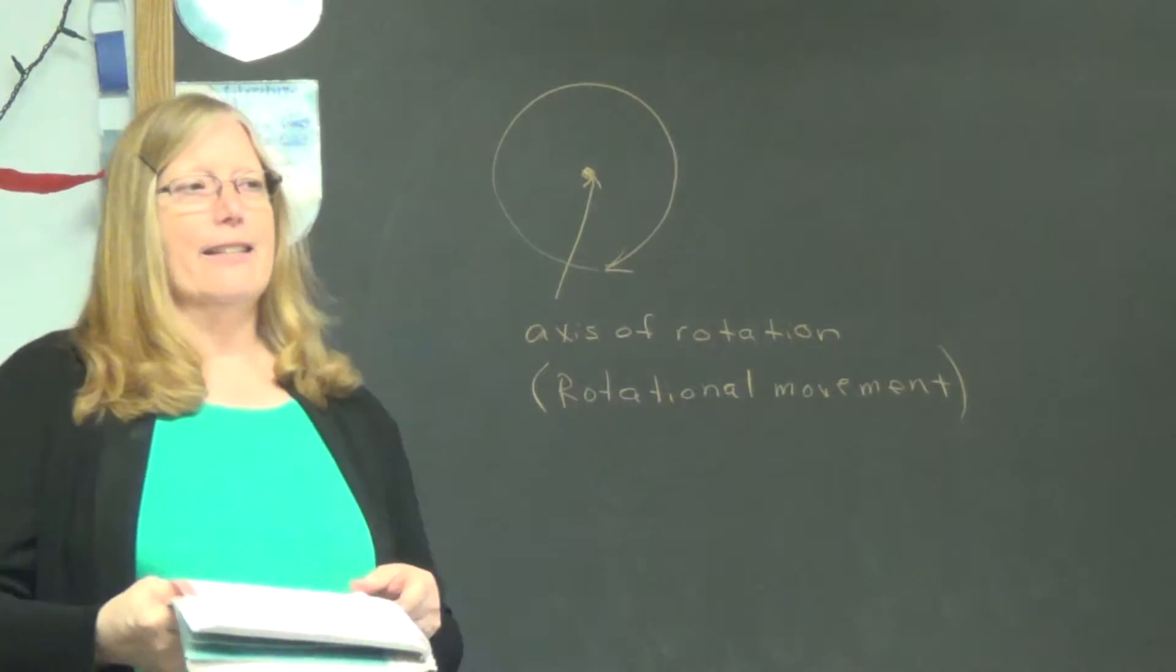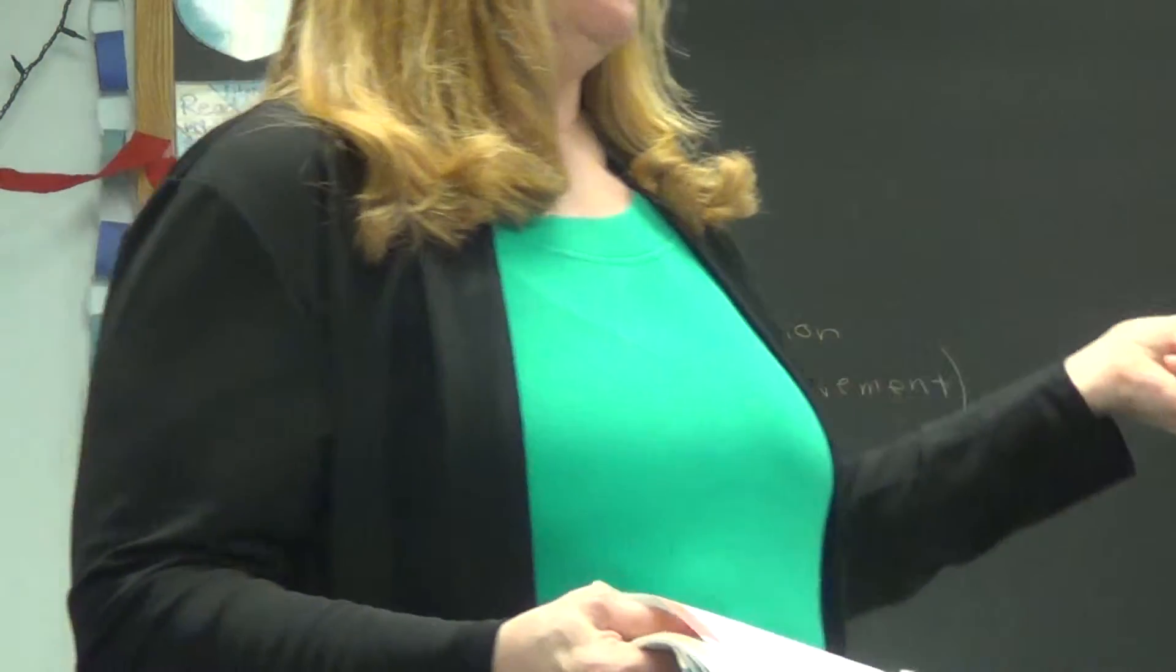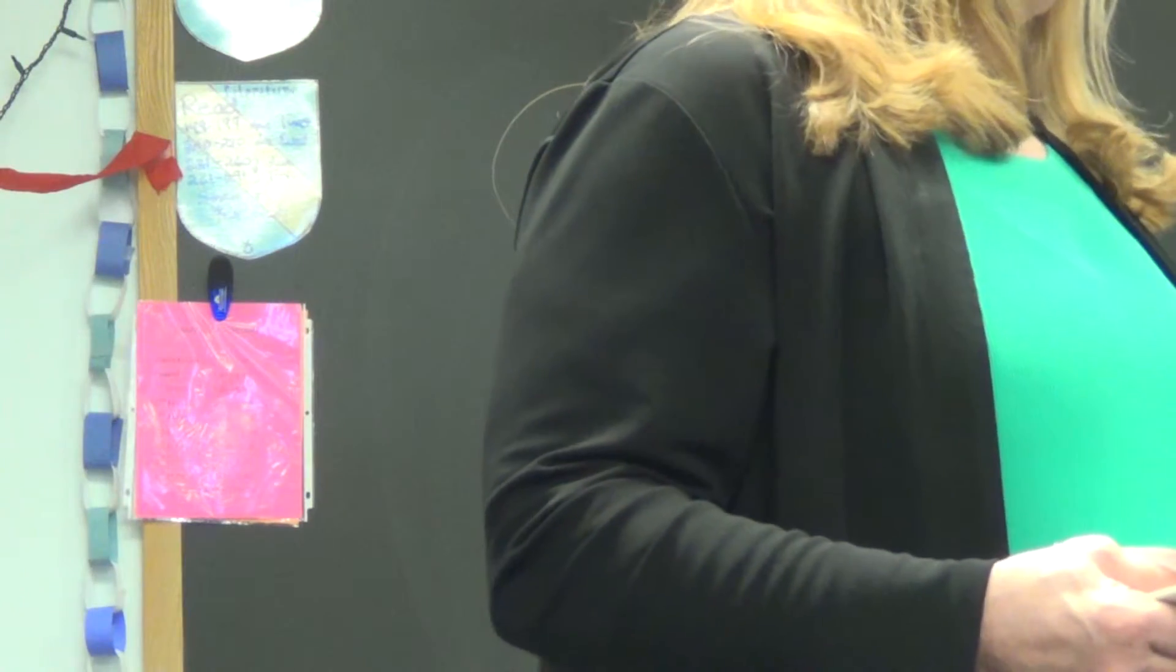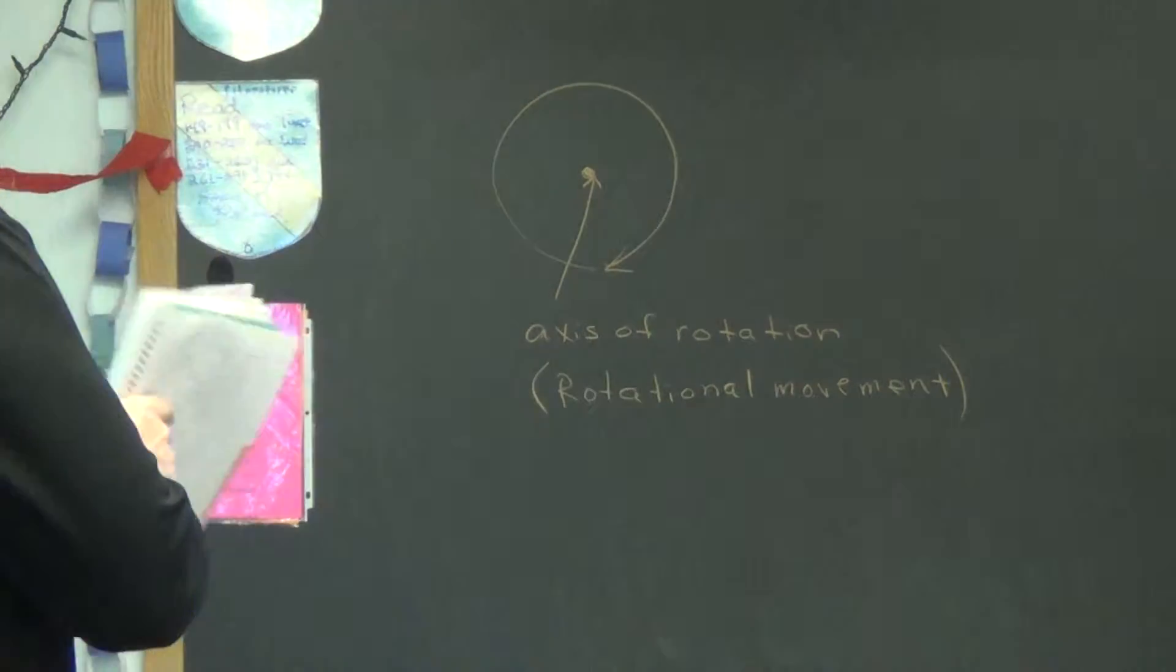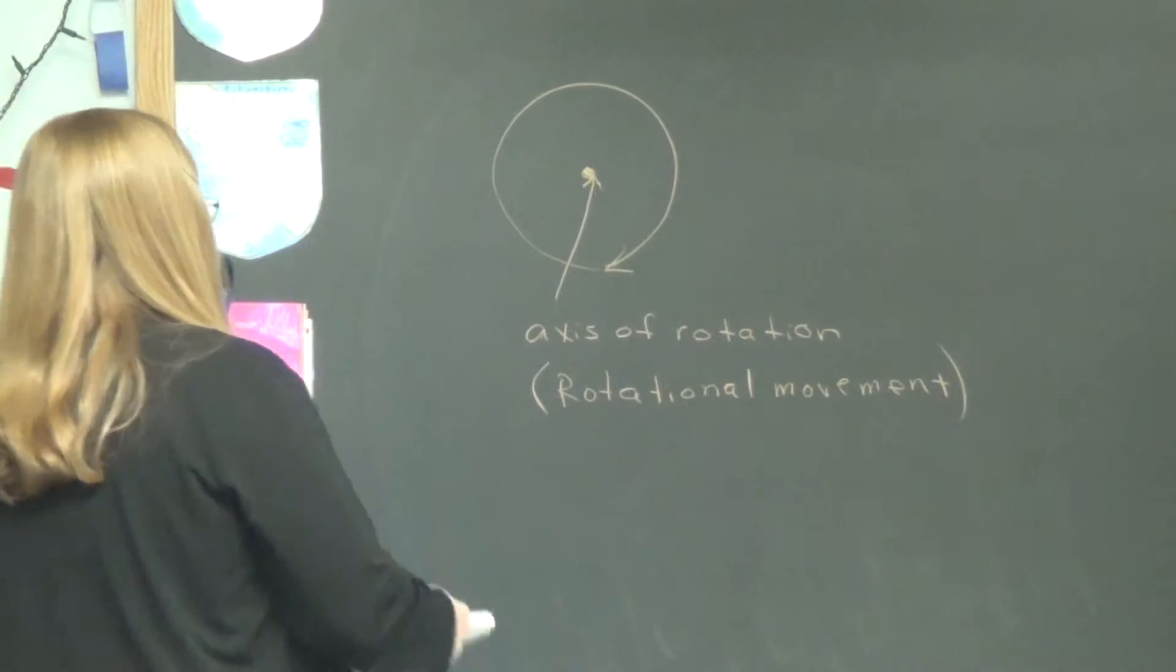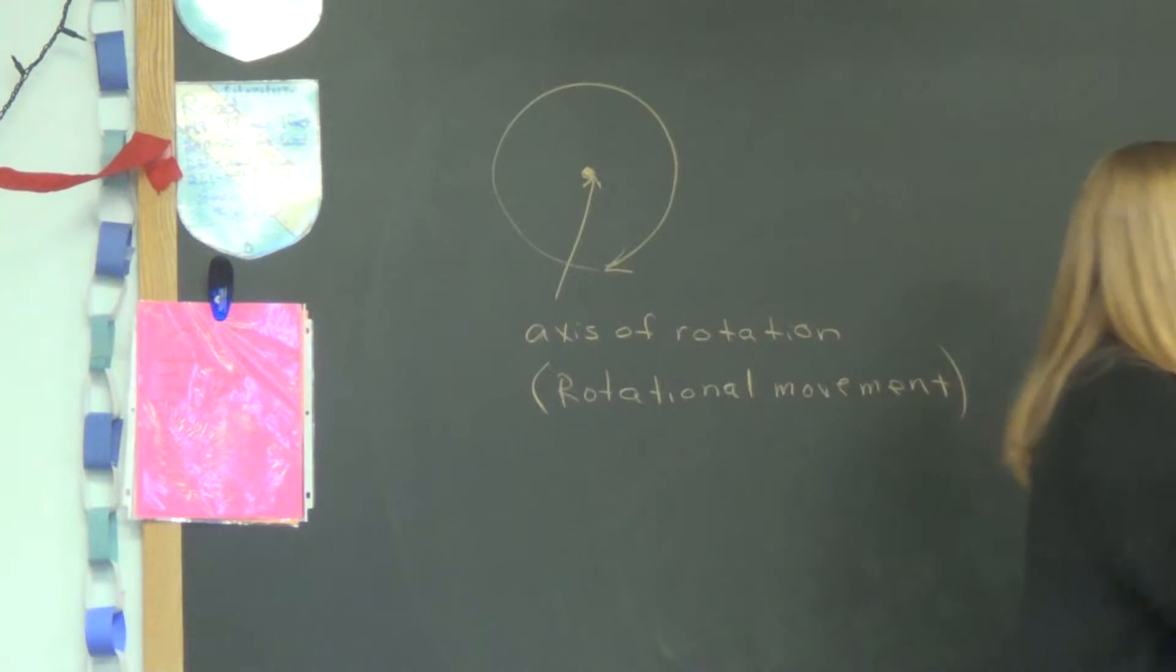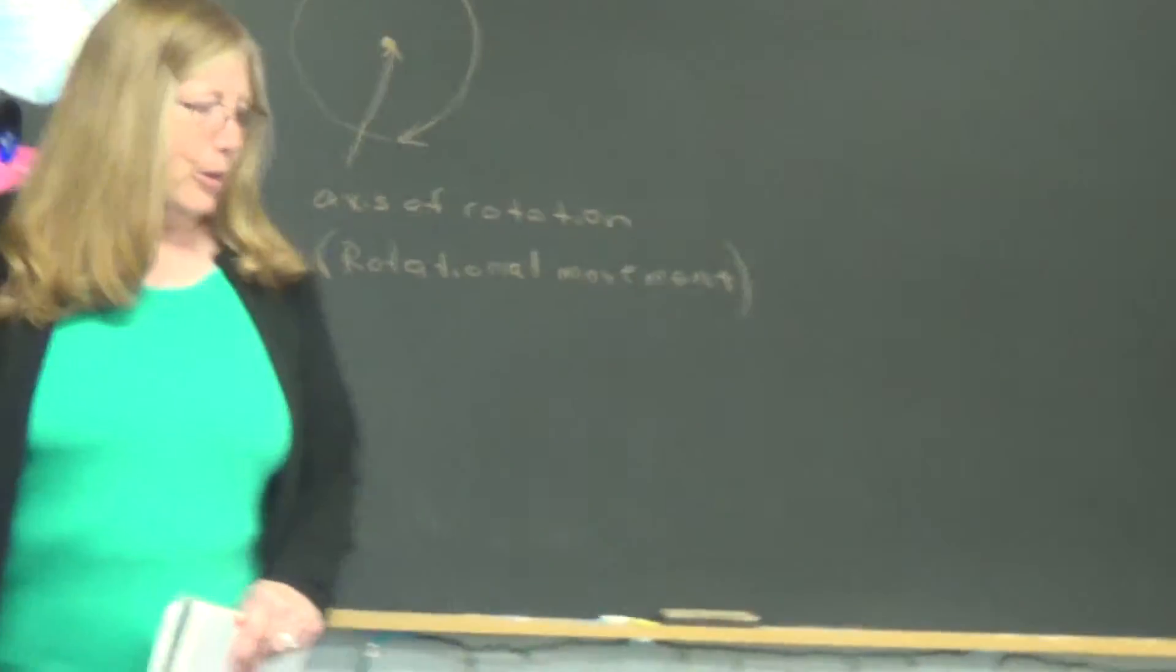Just for kicks, can something be experiencing rotational movement motion and translational motion at the same time? Can it? Hopefully, because that's what your tires did to get you here today. So the Axis of Rotation has rotational movement. We're not going to combine the two right now. Just look at rotational. We're going to give this rotation. I'm going to expand that circle.